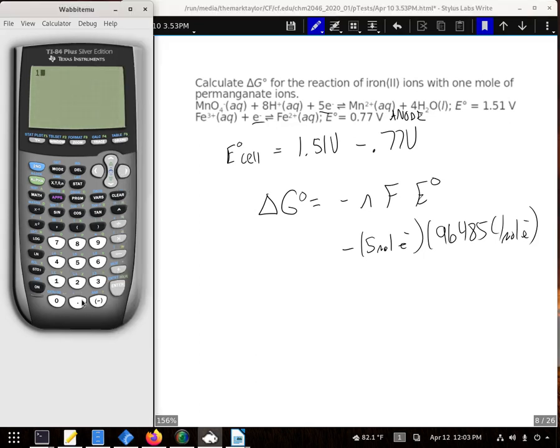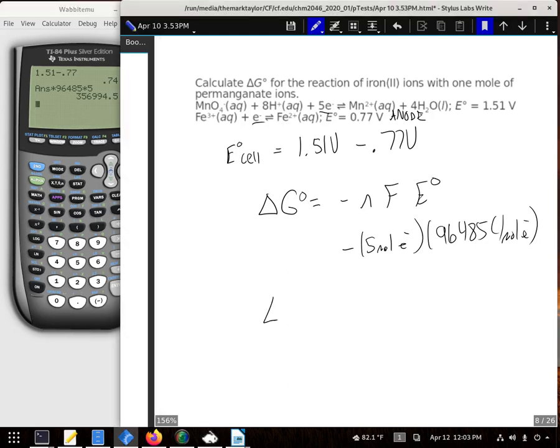So 1.51 minus 0.77 is our E°. We multiply this by 96,485 and also by five. And then just flip the sign. So our delta G, and I'm going to move the decimal place, is 357 kilojoules per mole.